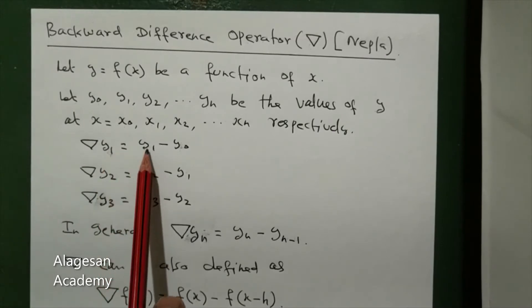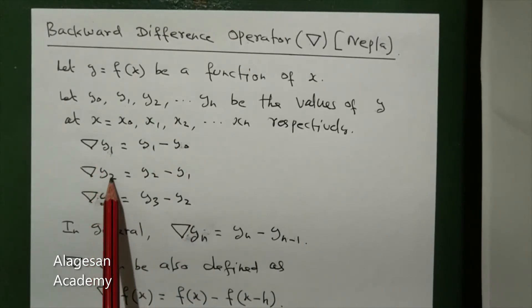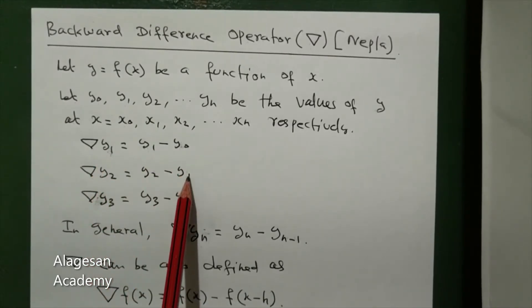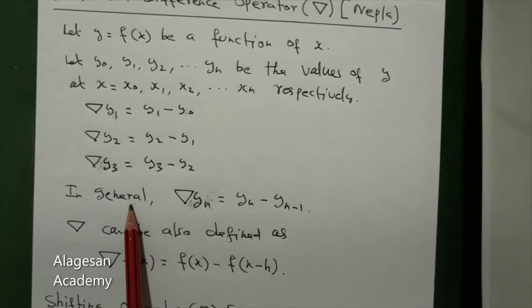Nepla y1, y1 minus the previous term, that is y0. Nepla y2 is y2 minus the previous term y1, that is y2 minus y1. Nepla y3 is y3 minus y2. In general, nepla yn equal to yn minus yn minus 1.